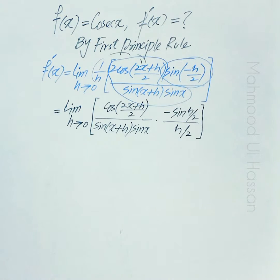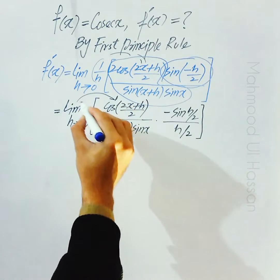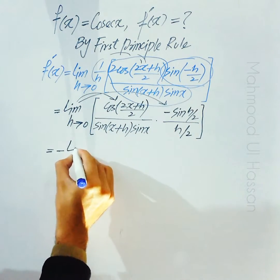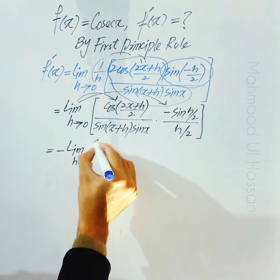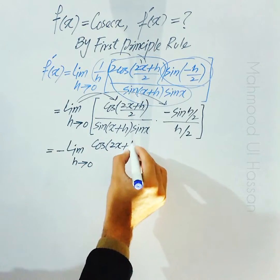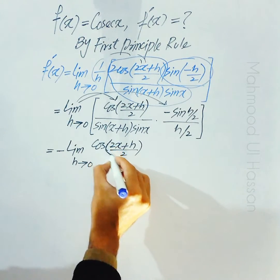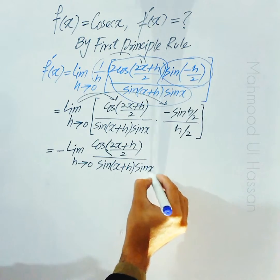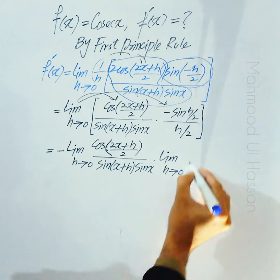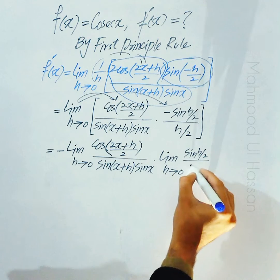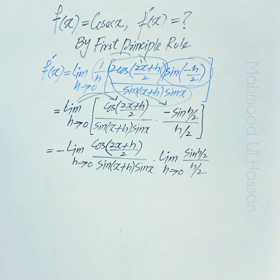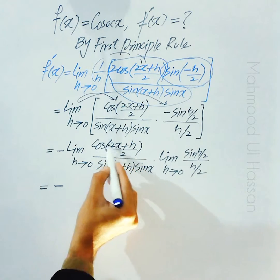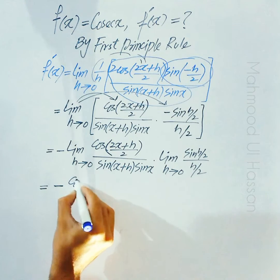Limit کا product rule لگائیں گے — limit first factor کے ساتھ بھی اور second کے ساتھ بھی لگے گا۔ f'(x) = −limit(h→0) [cos((2x+h)/2) / (sine(x+h)·sine(x))] × limit(h→0) [sine(h/2)/(h/2)]۔ h=0 substitute کریں: cos(2x/2) = cos(x)، اور sine(x+0)·sine(x) = sine²(x)۔